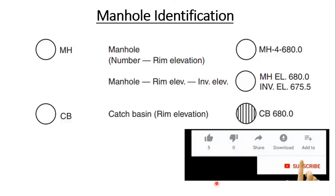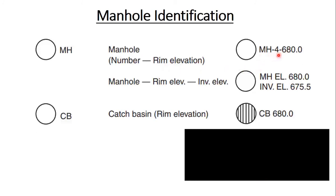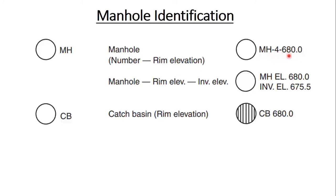Next we have manhole identification. On the site plan, a manhole can be labeled as MH-4-680, where MH stands for manhole, 4 is the manhole number, and 680 refers to the elevation. Alternatively, you can represent it with manhole elevation 680 and invert level 675. Either format can be used to represent manhole details on the site plan.